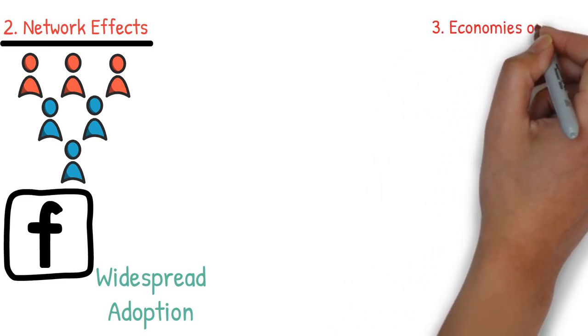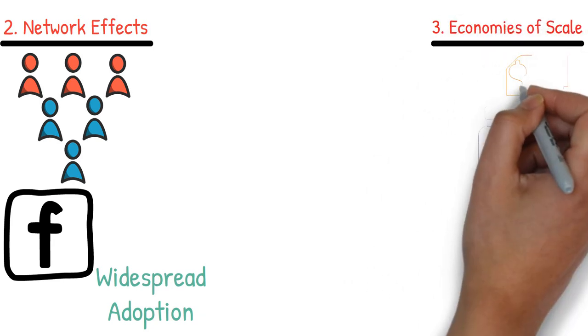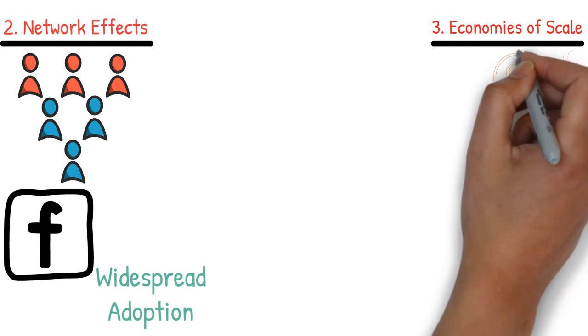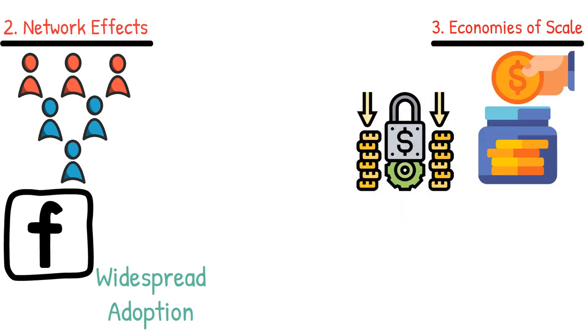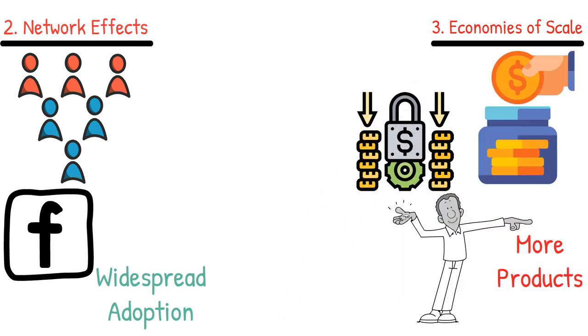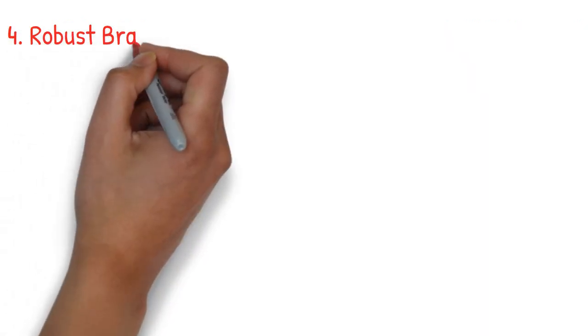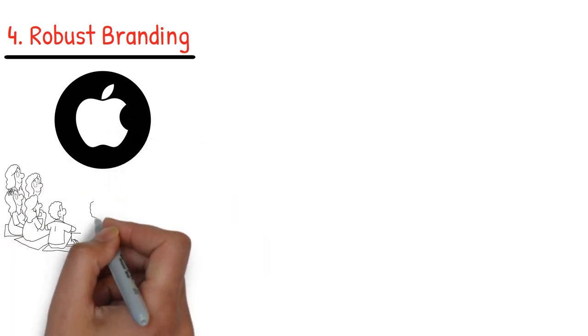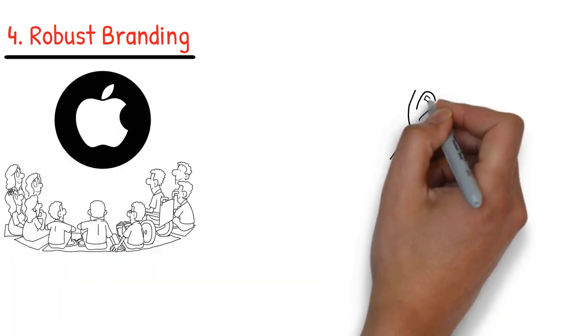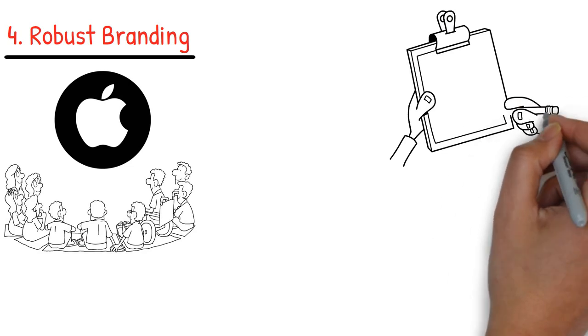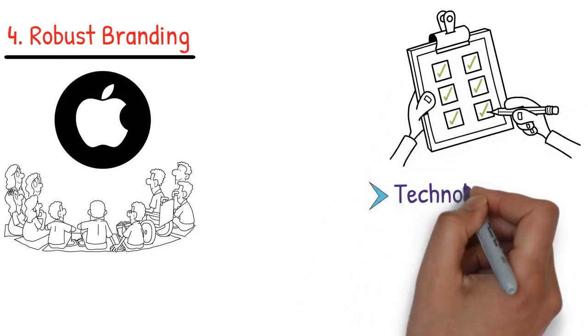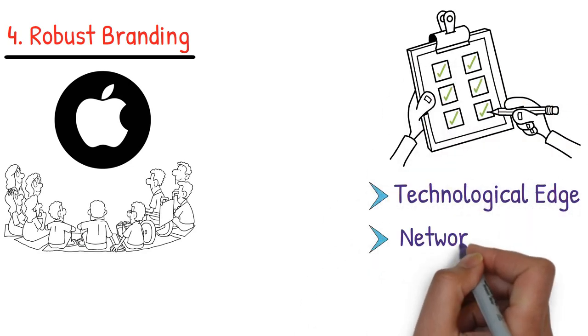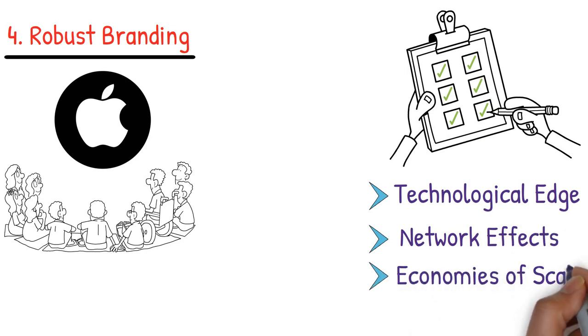Three, economies of scale. Production at large scales leads to cost savings. A bakery's fixed costs, such as rent, get distributed over more products, reducing the cost per item. Four, robust branding. Brands like Apple are inimitable, giving them a unique market position. To gauge a company's potential monopoly status, evaluate these criteria: technological edge, network effects, economies of scale, and brand strength.